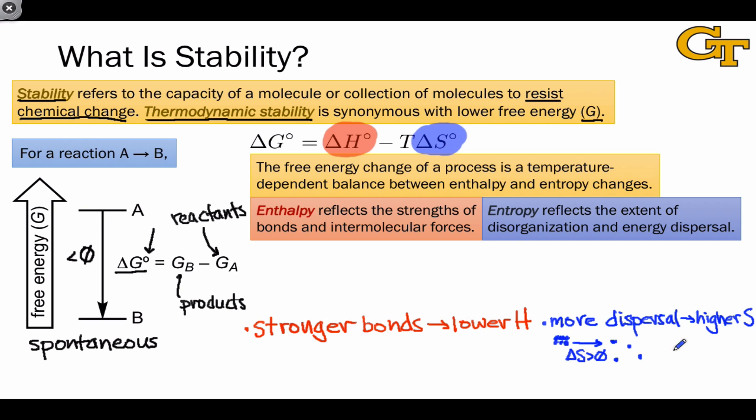But we can also think about this on a molecular level. The number of molecules, for example, is related to the entropy change. Making more molecules tends to be associated with a favorable positive change in entropy. Even subtle changes to molecular structure, like breaking apart a ring, have intuitive entropy changes, based on the change in the number of degrees of freedom, or possible ranges of motion, for atoms within the molecule.